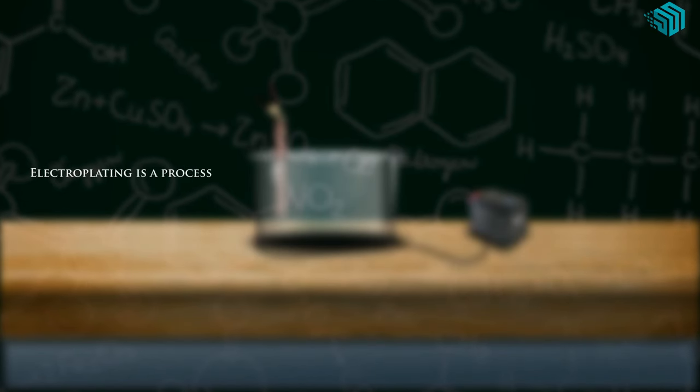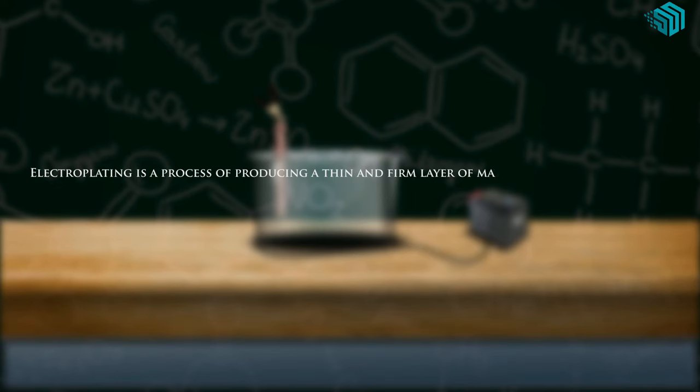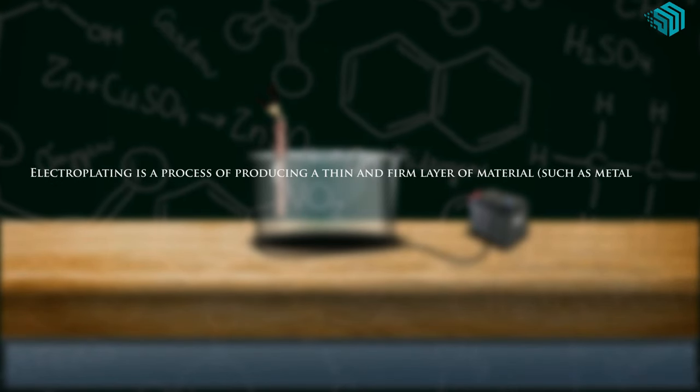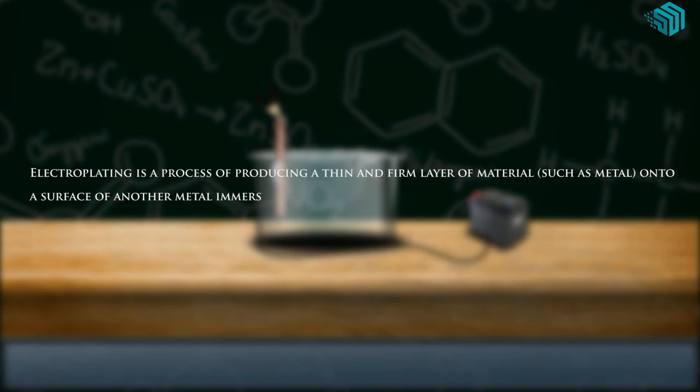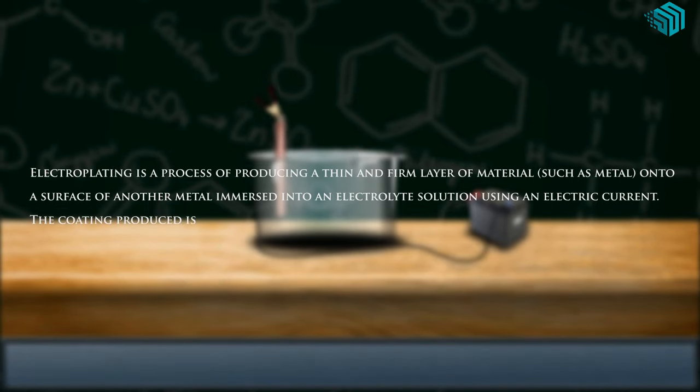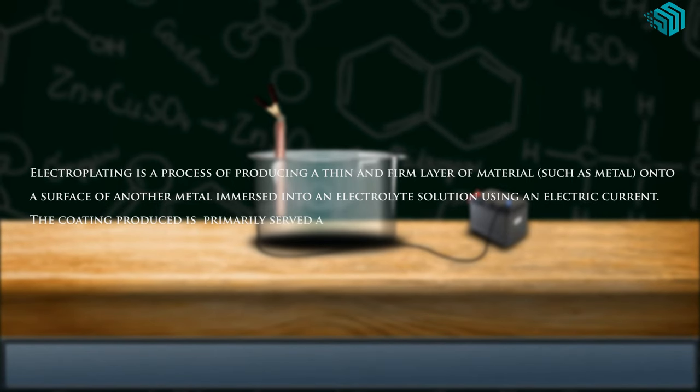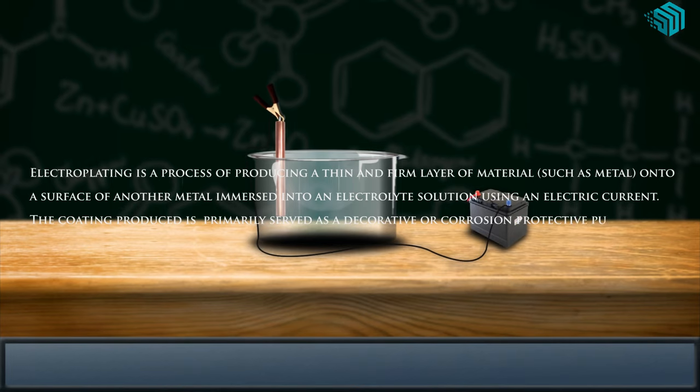Electroplating is a process of producing a thin and firm layer of material, such as metal, onto the surface of another metal immersed in an electrolyte solution using an electric current. The coating is primarily used for decorative or corrosion protective purposes.